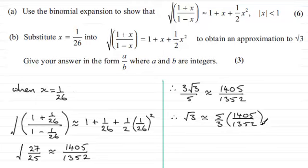And if you do that on your calculator, you end up with root 3, and remember we need to keep this as a fraction, not a decimal. So what you end up with is 7,025 divided by 4,056. Okay?